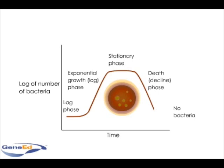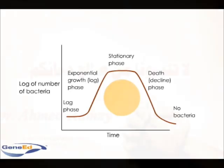As all nutrients in the environment are used up, the bacteria population enters the final phase, termed death or decline. Individual bacteria begin to die off from lack of nutrients, and eventually the number of dead cells exceeds the number of live bacteria. At this phase, the bacterial population is either radically reduced or completely destroyed.